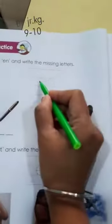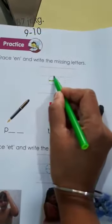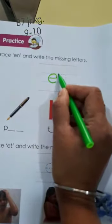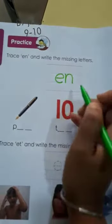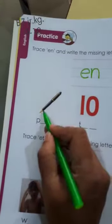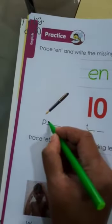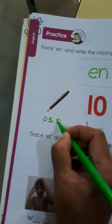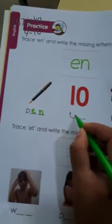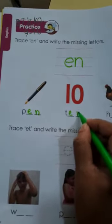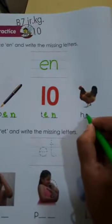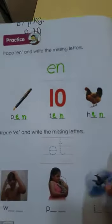Now, let's trace the en word. E, N, en. Right? So this P, P, en. So write here en. It will become pen. T, en, ten. And H, en, hen. Correct? This one you understood?